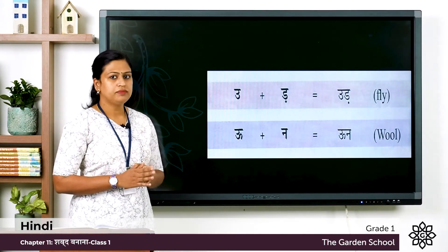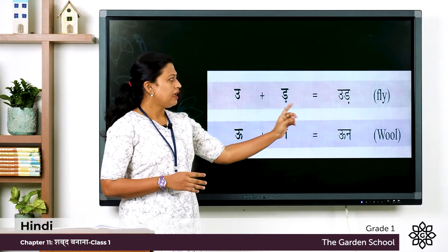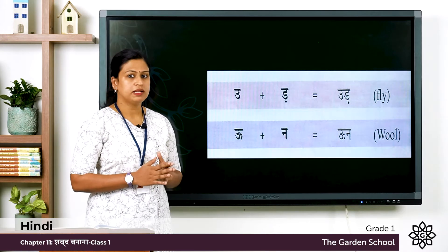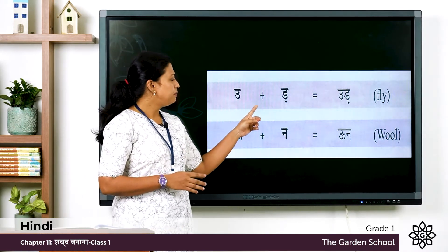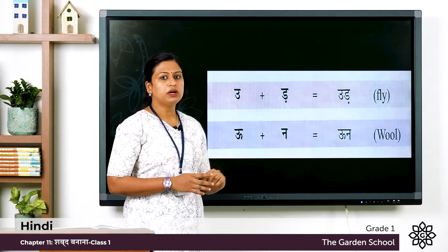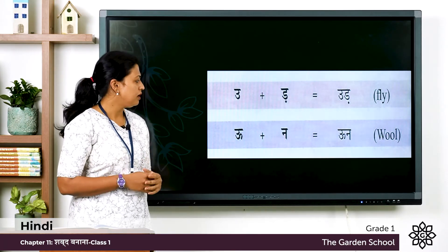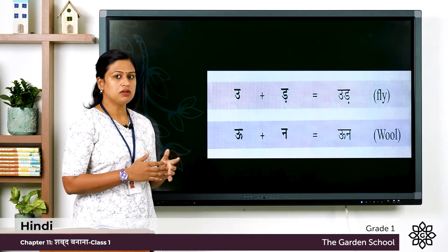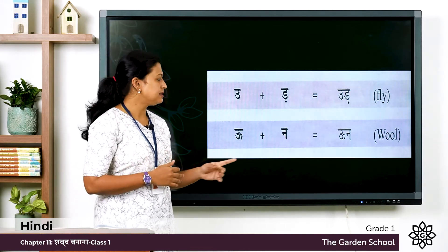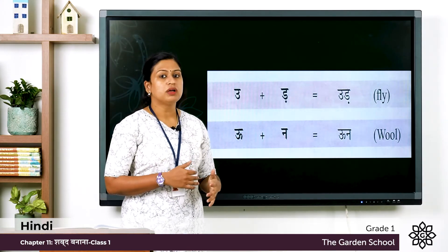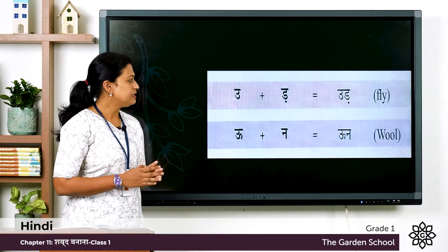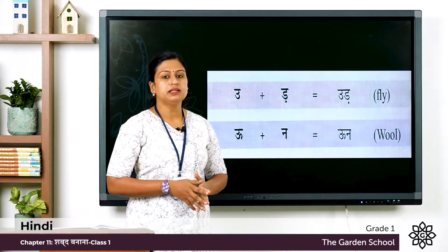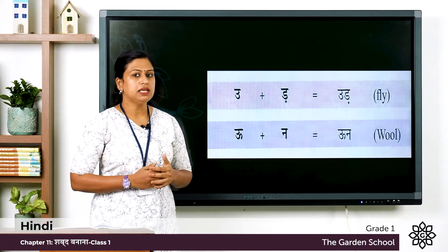Next one: U plus Da, and the word is Ud. Ud means fly. Next one, this has a longer sound: Uu plus Na, and the word is Uun. Uun means wool. Once again Uu plus Na, the word is Uun, meaning is wool.